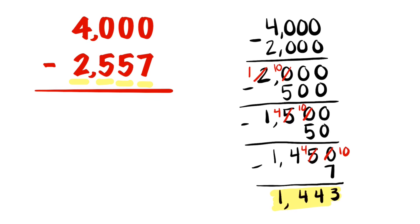4 take away nothing is 4, and 1 take away nothing is 1. So we know that 4,000 take away 2,557 is 1,443. So that's the difference.